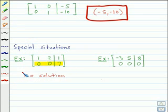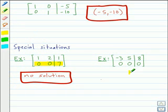Another special situation is when you have all zeros in a row. Zero equals zero, so for a system like this, you could say it has infinitely many solutions.